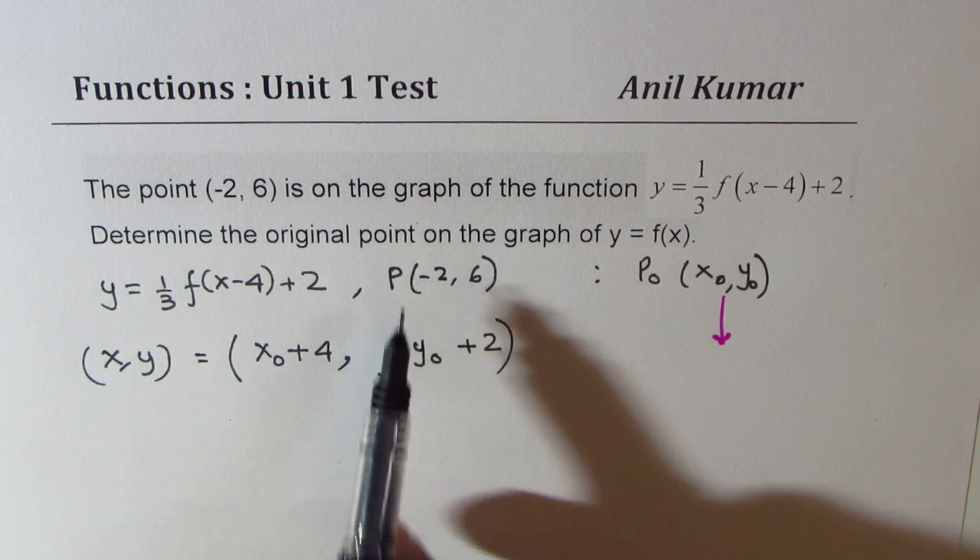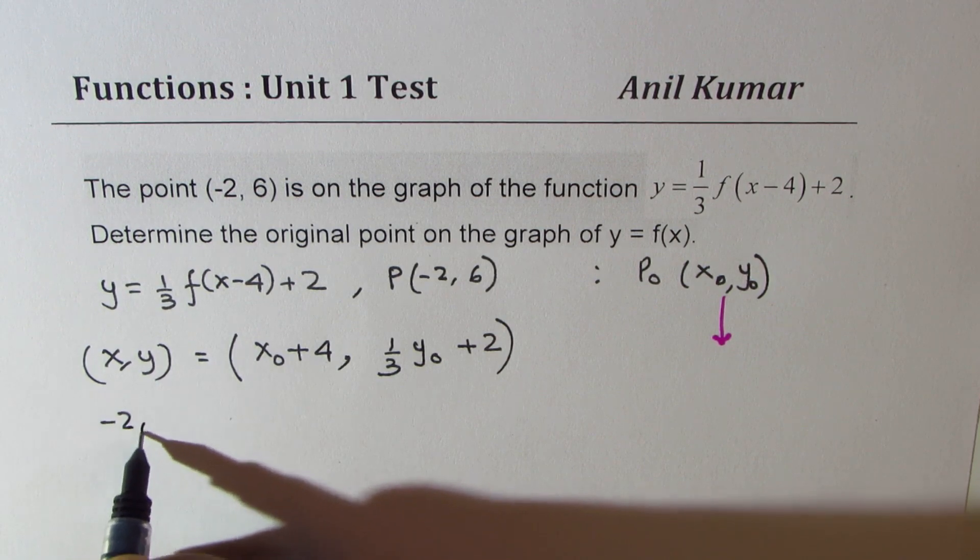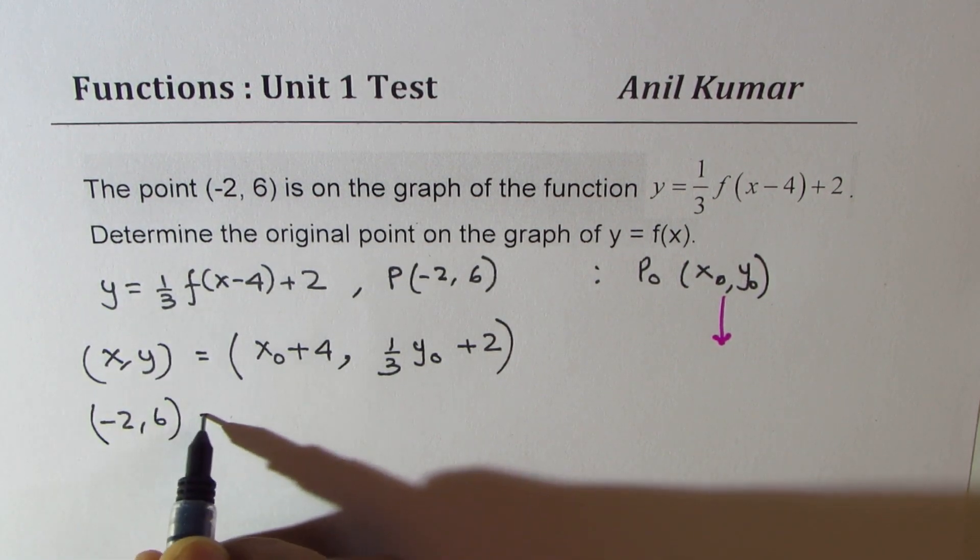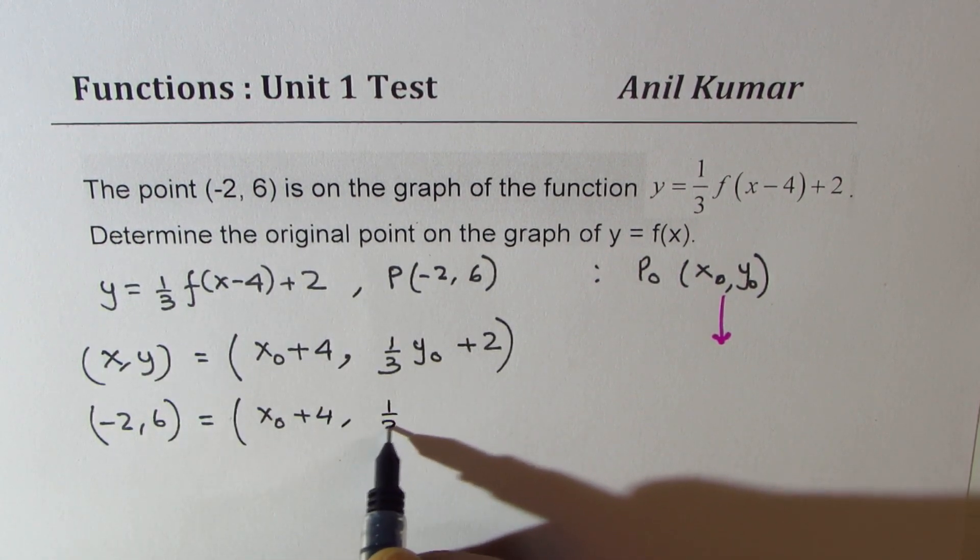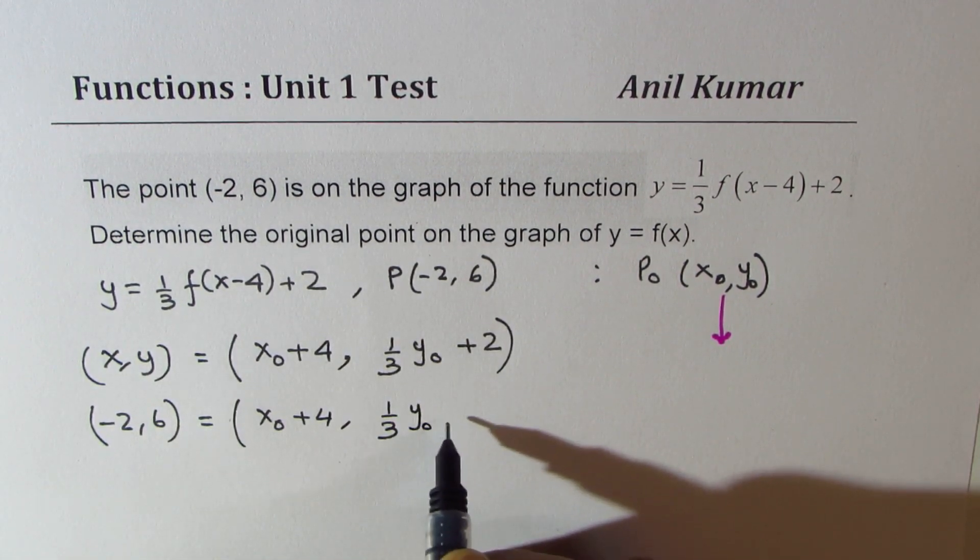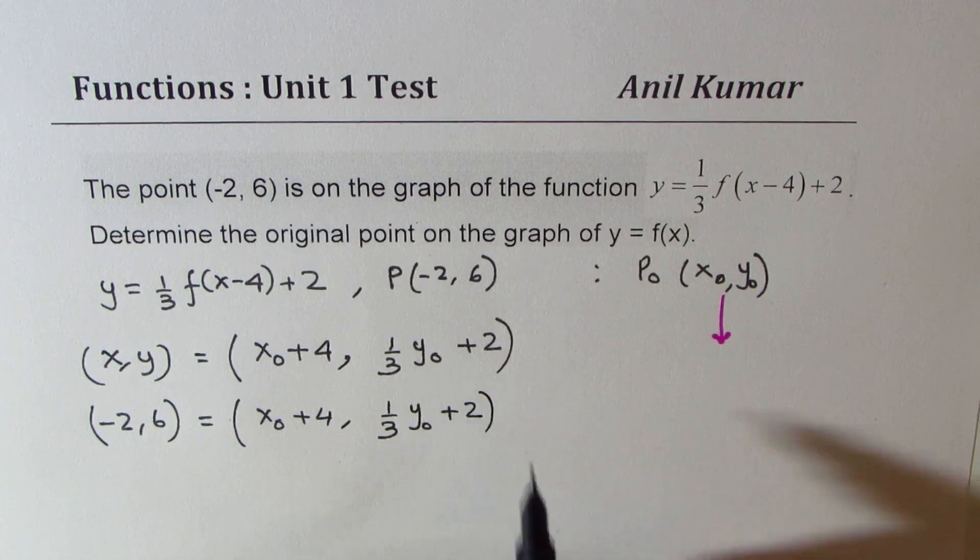Now what we are given here is the point (-2, 6). So (-2, 6) is equal to (x₀ + 4, 1/3 y₀ + 2).